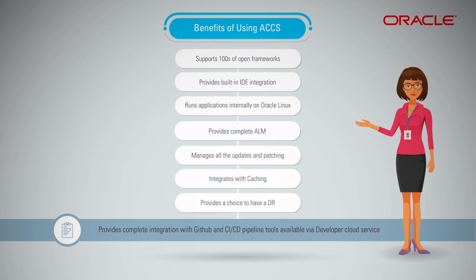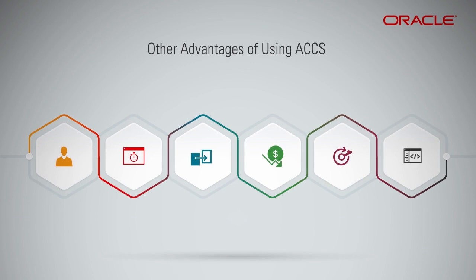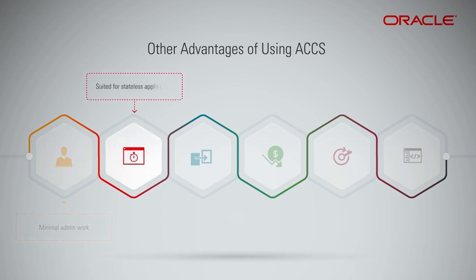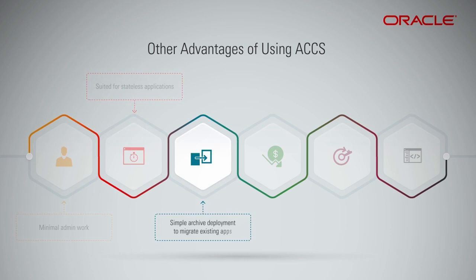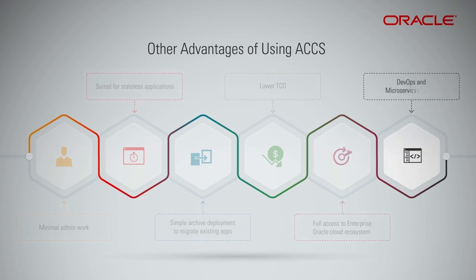ACCS provides a choice to have disaster recovery by creating a passive environment of the same or scaled-down setup in a different data center. Other advantages include minimal admin work, and it is useful for workloads like lightweight website setup, mobile backends, async worker jobs, and API backends. It is primarily suited for stateless applications with an option to persist state through storage and database services. You can migrate existing apps to cloud by simple archive deployment from on-premise or from DCS, with lower TCO and full access to enterprise Oracle Cloud ecosystem services like DBCS, messaging service, storage service, and more. It is DevOps and microservices centric.